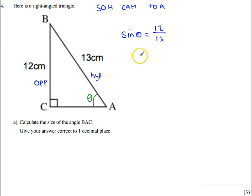So to work out what my angle theta is here, I need to undo this sine. So I need to do the inverse sine, which gives me this here, 12 divided by 13.